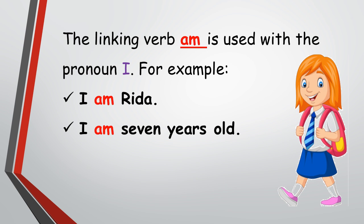The linking verb 'am' is used with the pronoun 'I.' For example: 'I am Rida,' 'I am seven years old.' In both examples, 'I' is the subject, 'am' is the linking verb, and 'Rida' and 'seven years old' are the information about the given subjects.